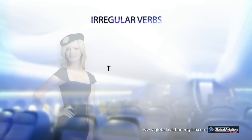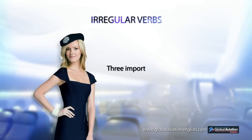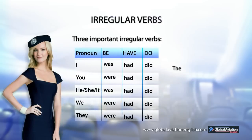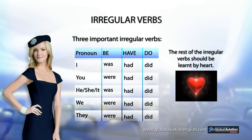Irregular verbs. There are three important irregular verbs: the verb to be, to have, and to do. The rest of the irregular verbs should be learned by heart.